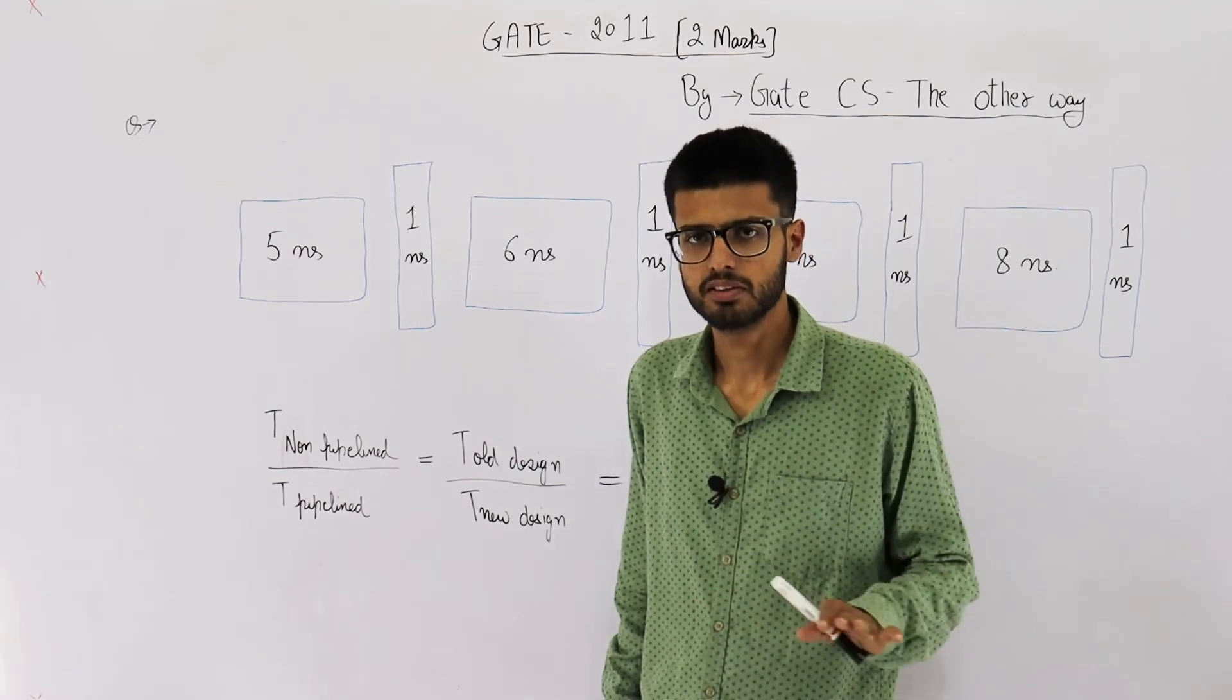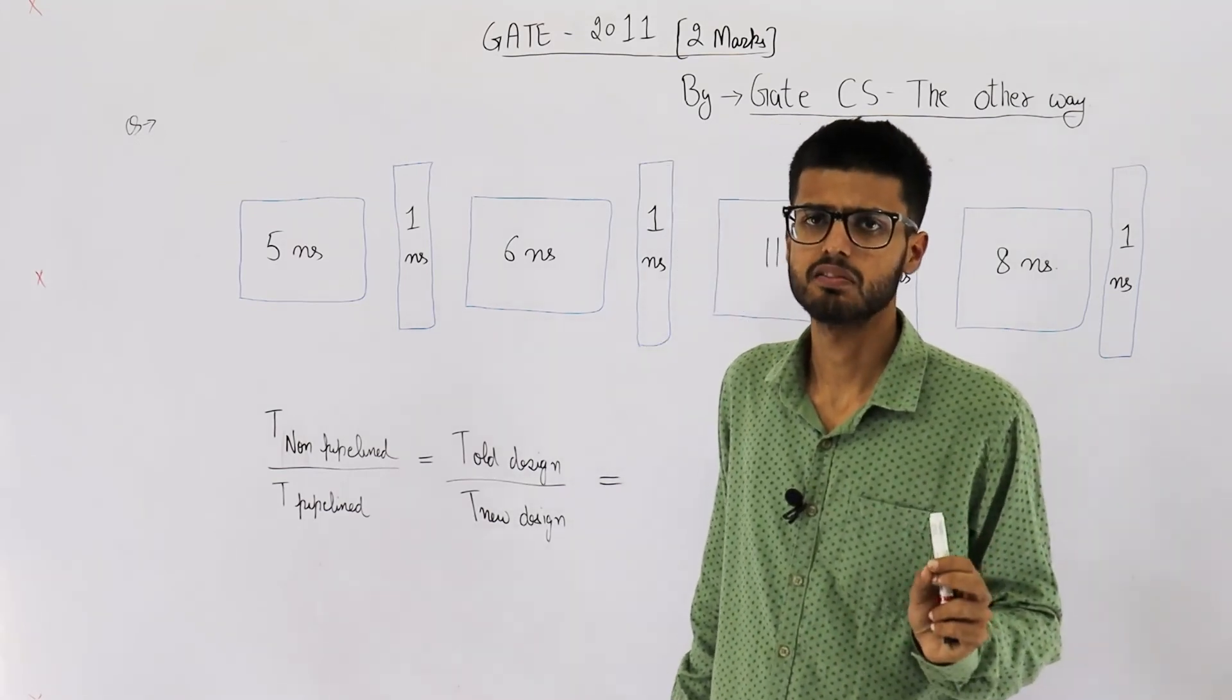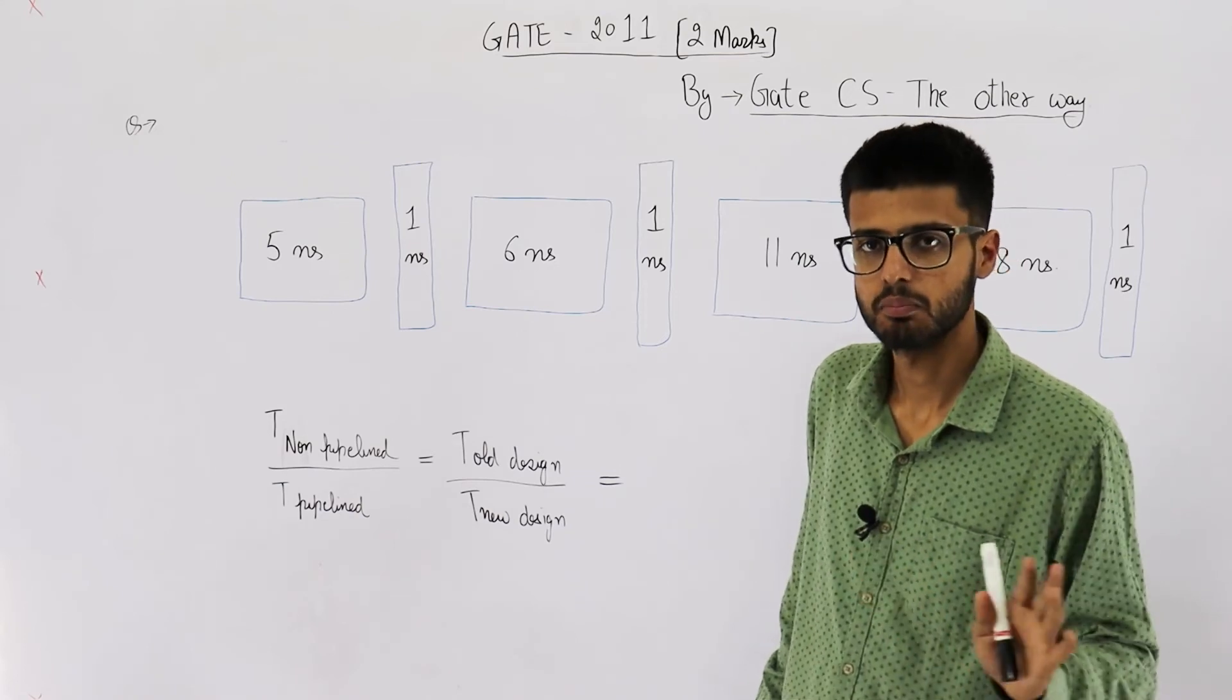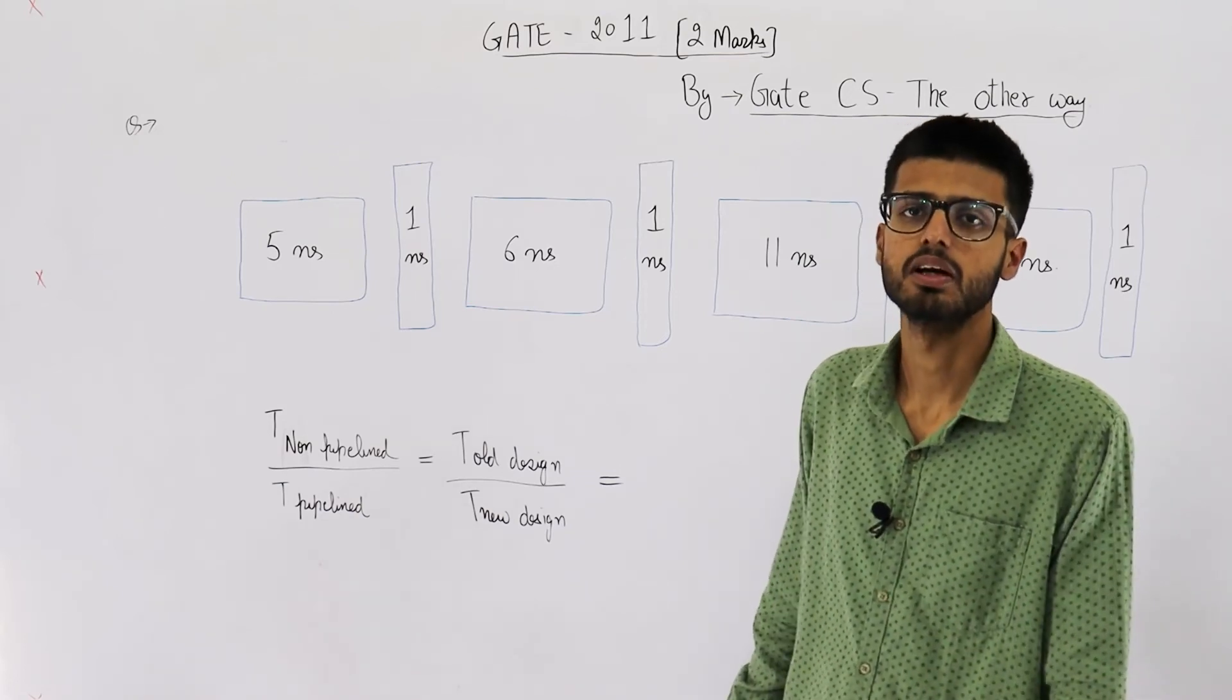By the way, even if they don't mention such things, if load is not given, that means number of instructions are not given, simply you can assume average CPI to be 1.